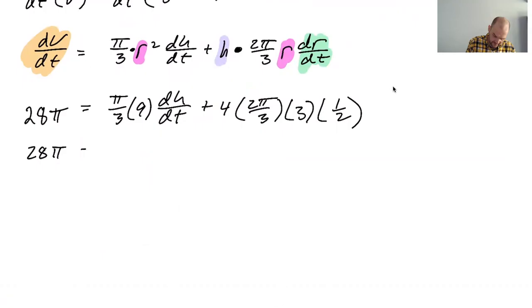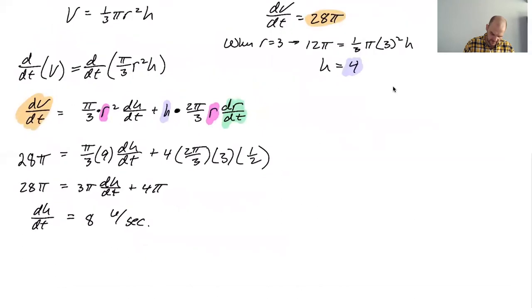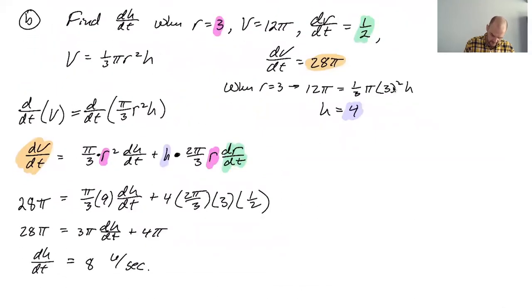So 28 pi is three pi dh/dt plus, all right, so the threes cancel. And then four times one half is two, so four pi. Four pi, so 24 pi over three pi is eight. And this should just be units per second. I believe that that is the answer, the final answer to b. But remember, everything is your solution.